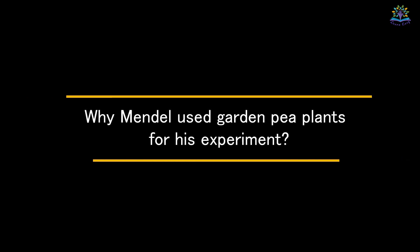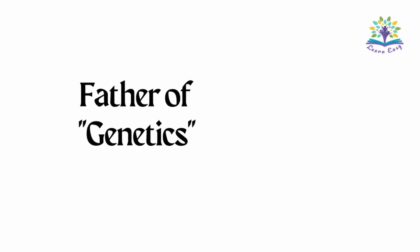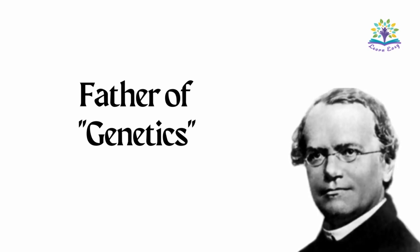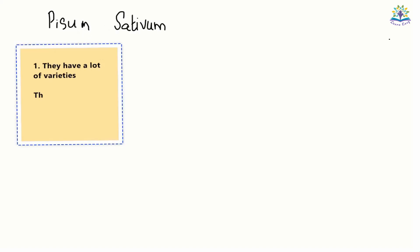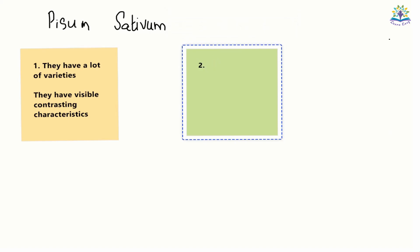One of the questions associated with Mendel's experiment is why he used garden pea plants. Gregor Mendel is regarded as the father of modern genetics. Based on his monohybrid and dihybrid experiments, he wrote laws of inheritance that laid the foundation for genetics. Garden pea plants, whose scientific name is Pisum sativum, have lots of varieties and lots of visible contrasting traits. They are bisexual flowers, meaning they have both male and female reproductive parts and can do self-pollination, but by removing the male part, we can do artificial pollination to get a desired variety.